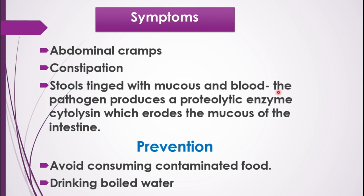The reason is that Entamoeba produces a proteolytic enzyme — an enzyme which can destroy proteins. Our GI tract is lined by cells made up of proteins and lipids. The proteolytic enzyme cytolysine produced by the pathogen erodes the mucus of the intestine, and small blood vessels are also ruptured, hence mucus and blood are released through the feces.